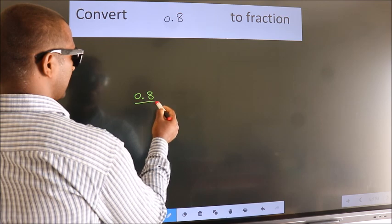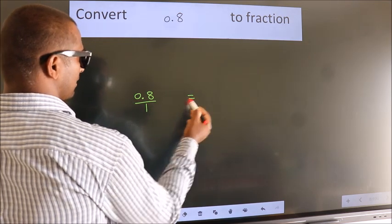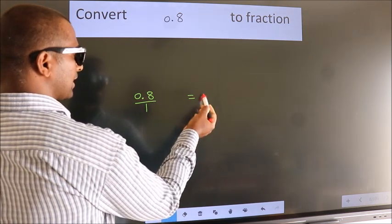You take it as 0.8 by 1. Now this should be converted to a fraction.